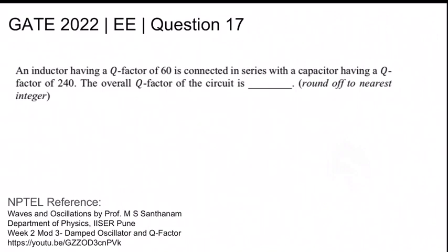This is GATE 2022 Electrical Question Number 17. An inductor having a quality factor of 60 is connected in series with a capacitor having a quality factor of 240. The overall quality factor of the circuit is being asked and rounded off to nearest integer. The NPTEL reference is Week 2 Module 3: Damped Oscillator and Q-Factor.